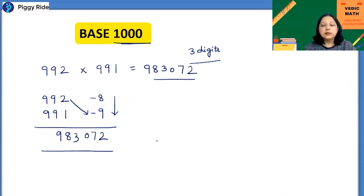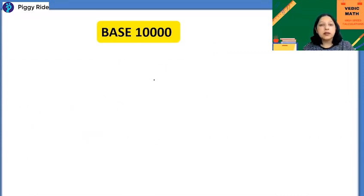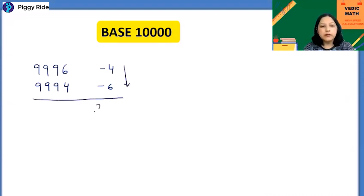Let's take another example here and change the base now. Base is 10,000. So let's take 9996 and 9994. See such big numbers I have taken here. Now minus 4 here and minus 6 here. Now do the vertical multiplication: 6 times 4 is 24. And now base is 10,000, so there should be 4 digits here, 4 digits in the last. So 0024.